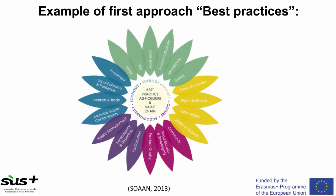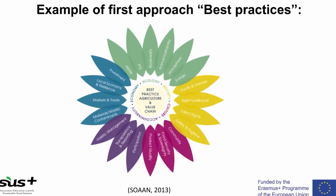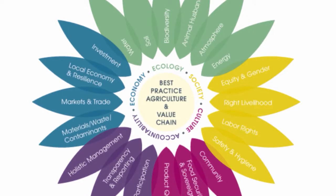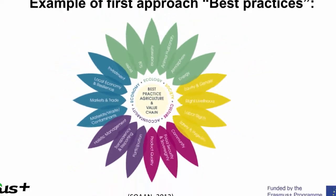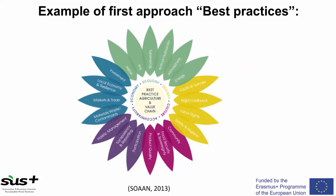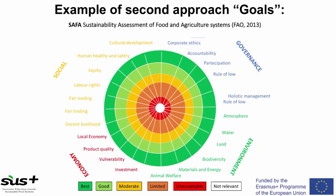A good example of best practice is the SOAN approach, where IFOAM developed five dimension criteria — ecology, society, culture, accountability and the economic dimension of sustainability — each with several indicators. Another interesting approach is SAFA by FAO, using a methodology with four different dimensions — governance, environmental, economic and social — each with specific indicators, and providing a rating reference from lowest to highest: not relevant, unacceptable, limited, moderate, good and best.